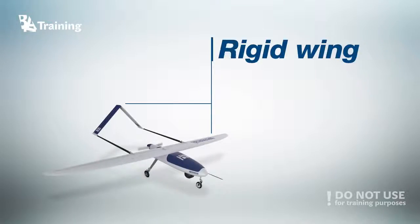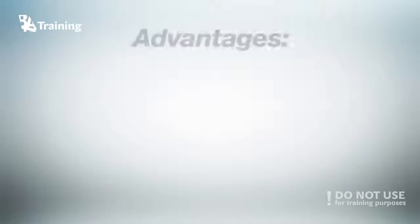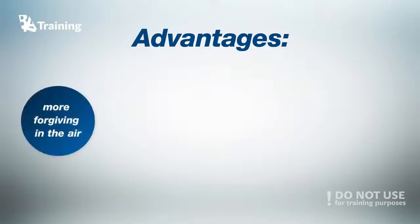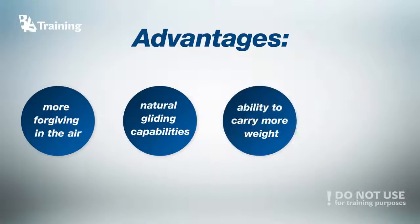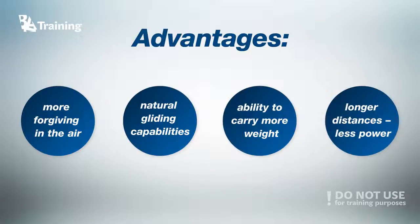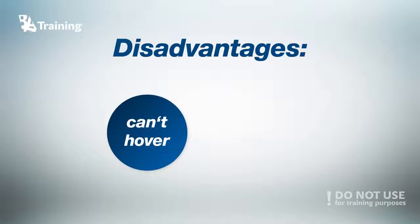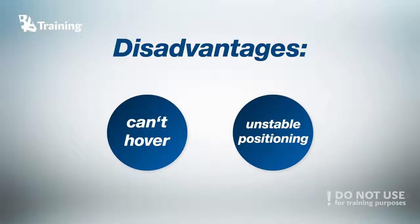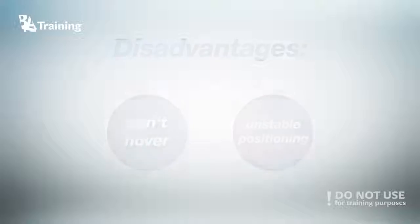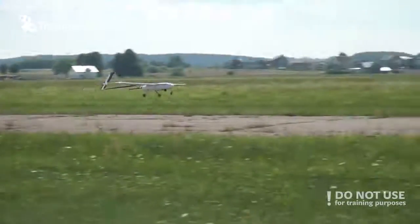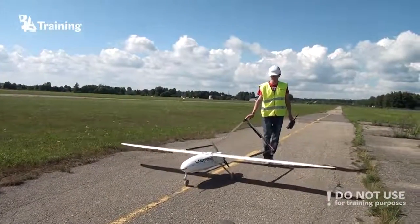The first one is fixed wing drones. Fixed wing UAVs consist of a rigid wing which generates the major lift of the drone. Fixed wing aircraft is more forgiving in the air if they are facing piloting or technical errors, and they have natural gliding capabilities. They are also able to carry more equipment or weight for longer distances on less power. However, when it comes to precision missions, fixed wing aircraft may have some disadvantages. Due to air moving over the wings to generate lift, they must stay in forward motion — meaning they can't hover in one spot and cannot provide precise camera positioning. To sum up, choose a fixed wing for longer missions and more payload, but if you need to keep the camera in one place, consider a different type of drone.